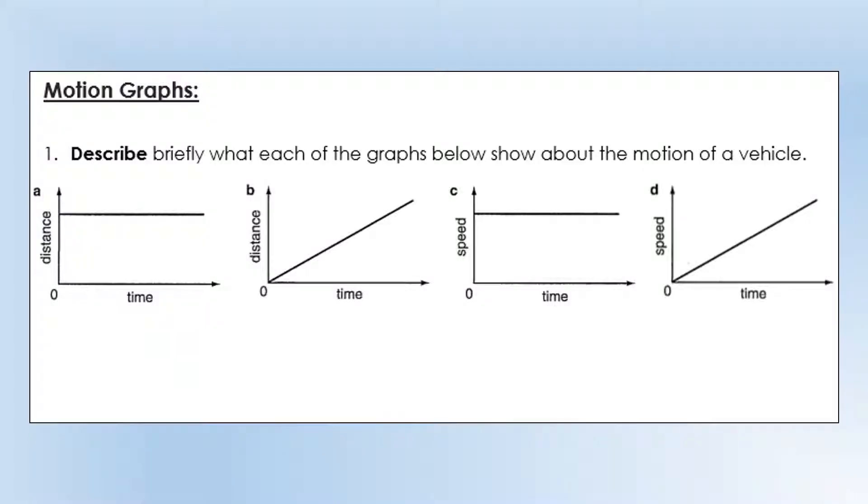All right, so let's look at some questions to do with motion graphs. To start with, we're going to describe what each of the graphs shows about the motion of a vehicle. Looking at graph A, we can see its distance is not changing with time, so that object is not moving or it's stationary. Object B, we've got the distance increasing over time, so it is moving, and the gradient is constant, so it's moving at constant speed.